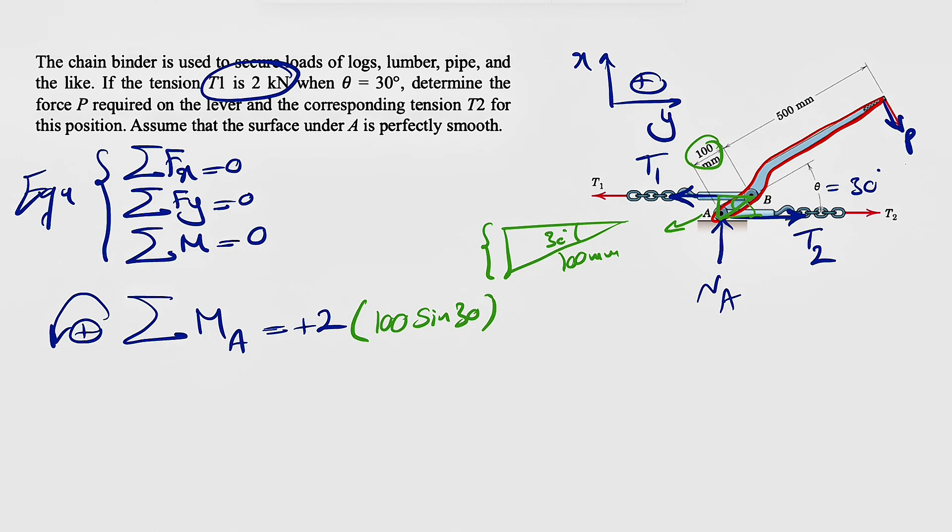So that's the moment of T1. We also have the moment of P, which is clockwise, so negative. We are looking for P. Same concept: vertical distance from A to P. This is the line of action of P, and the distance we are interested in is 500 plus 100, or 600. This will be equal to zero.